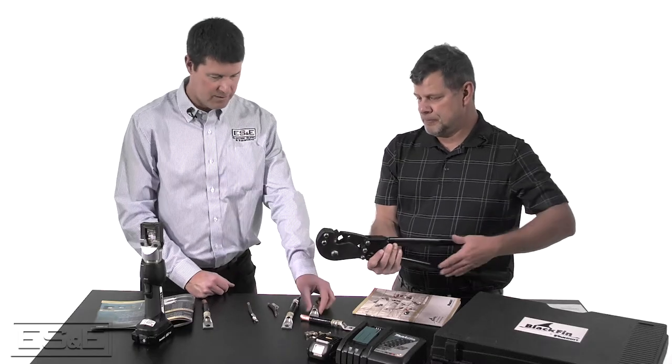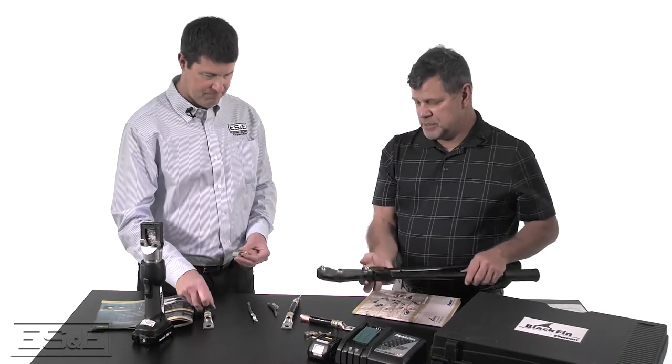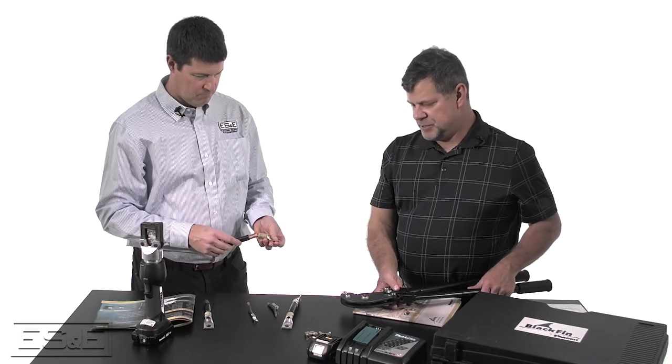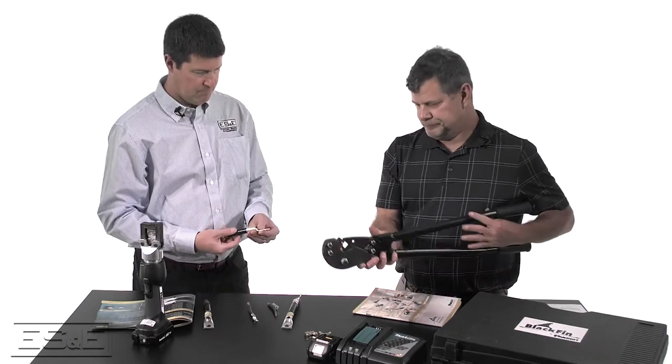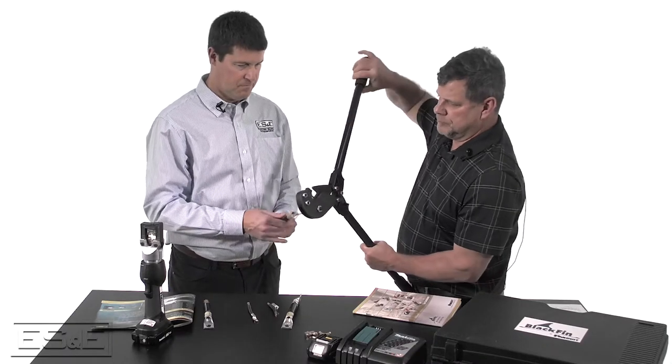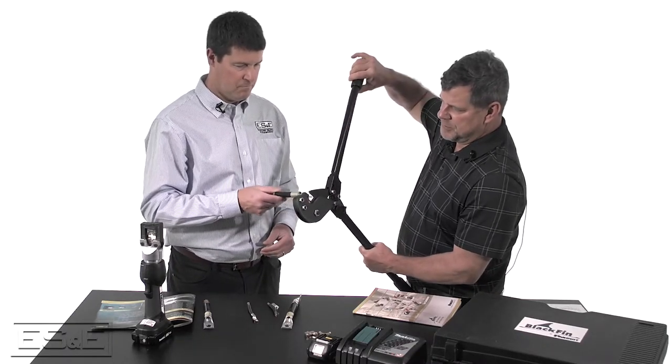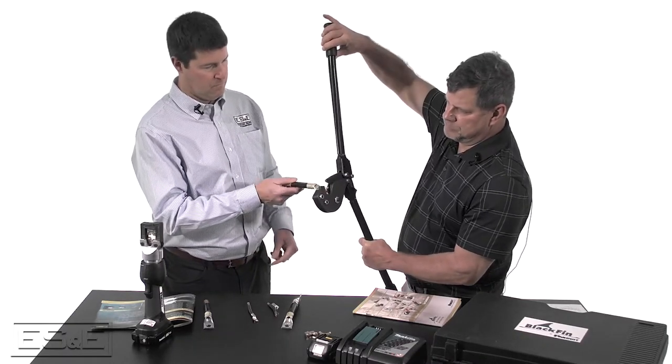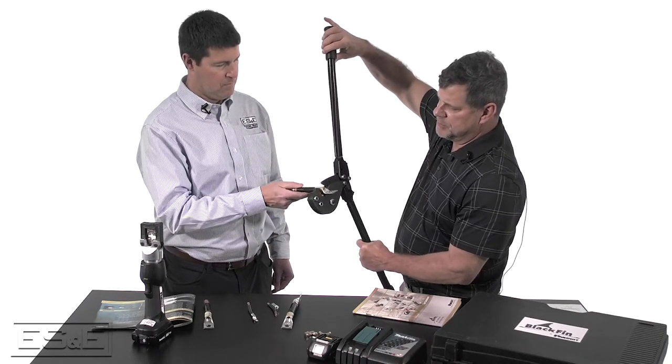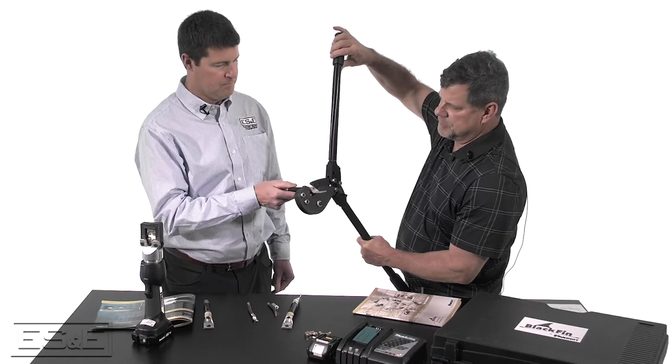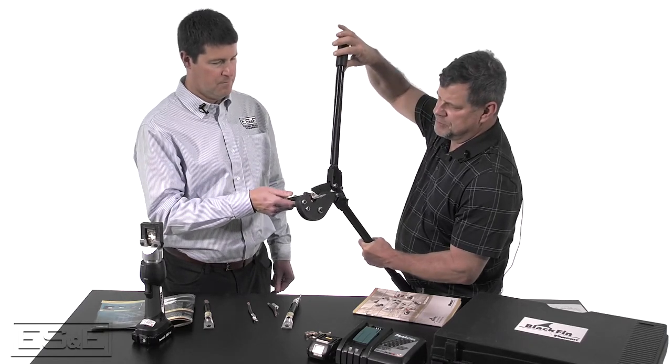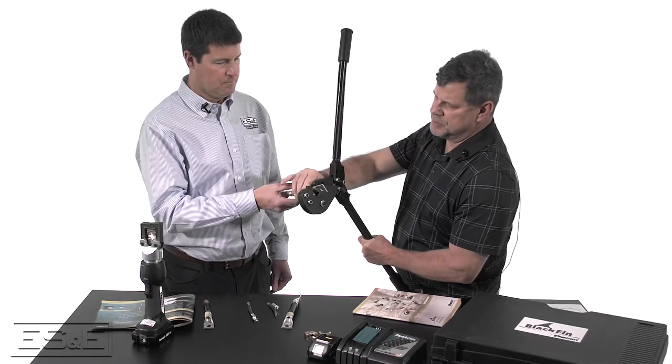You want to show us how to do a crimp with it? Yeah, let's go ahead and do it. We've got it set up right now to do a 250 MCM. If you want to go ahead and place that in there. And place it at the, there you go. And actually, let's rotate it 90 degrees. Let's do it right there.